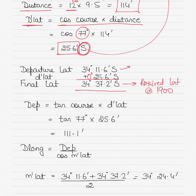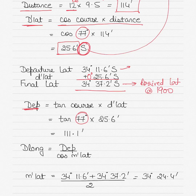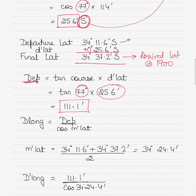Next we find the D-long. First, calculate departure using the formula: departure equals tan(course) multiplied by D-lat. Tan(77°) multiplied by 25.6 gives 111.1 nautical miles. Departure is a unit of distance, so negative values are ignored. Then D-long equals departure divided by cos(M-lat).